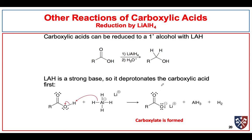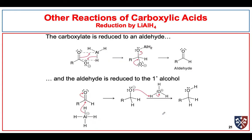Another reaction we've already seen is reduction by lithium aluminum hydride. Lithium aluminum hydride is a strong reductant. Initially, a hydride reacts with the acidic hydrogen on a carboxylic acid to form hydrogen gas and a carboxylate. That carboxylate can still be reduced by very strong reducing reagents — we couldn't do this with sodium borohydride, but we can with lithium aluminum hydride. We initially form a complex between the oxygen atom of our carboxylate and the aluminum, and at the same time the hydride is transferred to the carbon, which can dissociate to give an aldehyde.